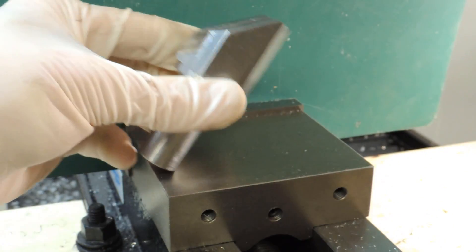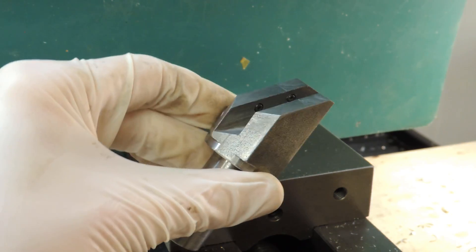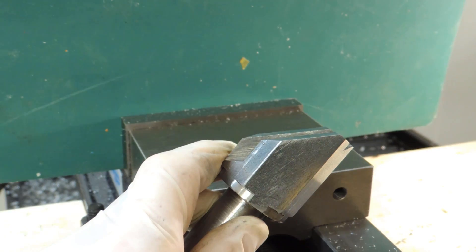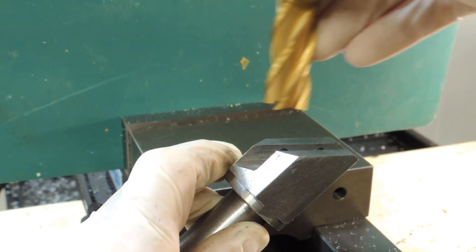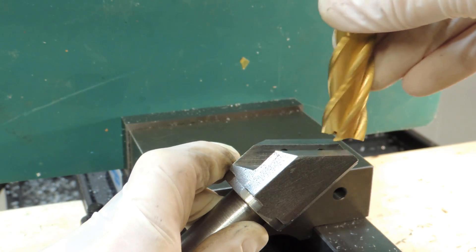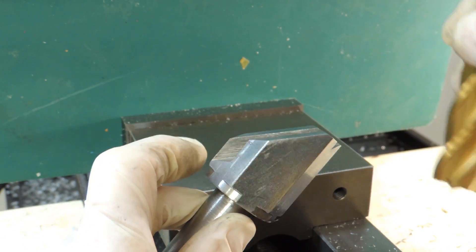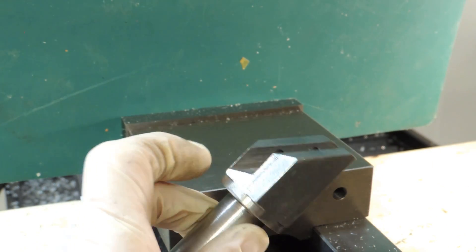It started out as a piece of hex stock and I put it in the mill in the vise at a 45 degree angle like this. With the end mill, it just started coming across and shaving it little by little, coming down until I got it cut off at a 45 degree angle.